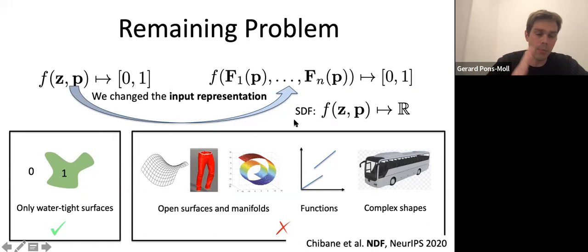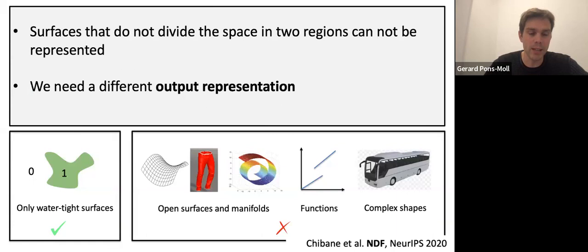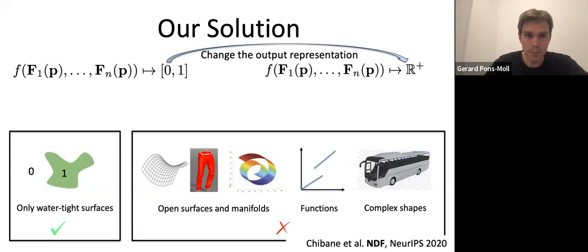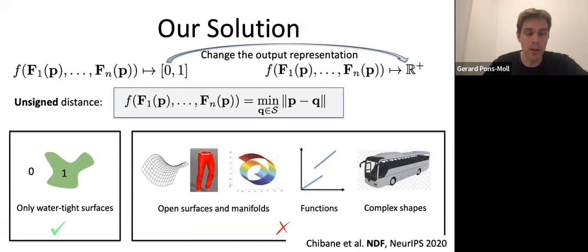So we need to change the output. Again, we strive for the simplest change that does the trick. Here we are changing the output from a signed distance field or occupancy to an unsigned distance field. You might say this is a trivial change — yes, but this leads to a new algorithm.